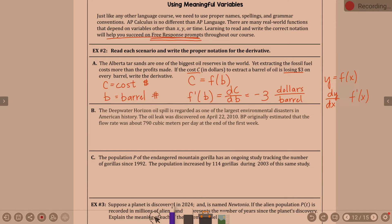The Deepwater Horizon oil spill is regarded as one of the largest environmental disasters in American history. The oil leak was discovered on April 22nd, 2010. BP originally estimated the flow rate was about 790 cubic meters per day at the end of the first week. We need to come up with variables that make sense in the problem — not just x and y.